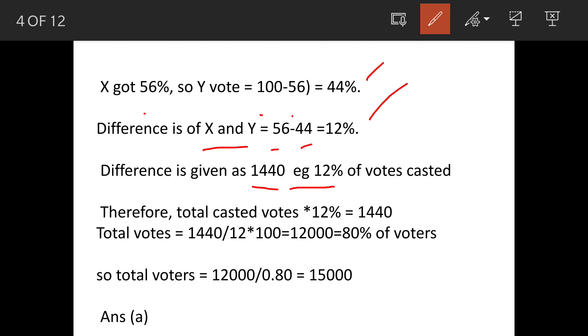That means total votes cast times 12% equals 1440. So total votes cast will be 1440 divided by 12, times 100, which equals 12,000. This is 80% of voters.